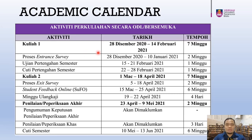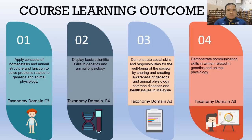The academic calendar includes lectures, study week, examination weeks, midterm, and final semester holidays. Now we look at the course learning outcomes for Bio 095. The first learning outcome is to apply the concept of homeostasis and animal structure and function to solve problems related to genetics and animal physiology.